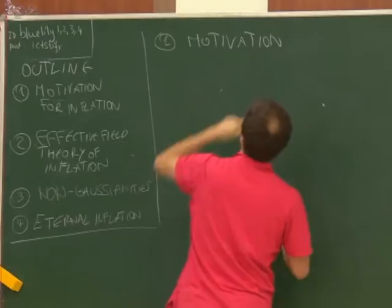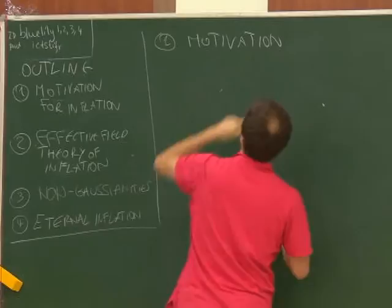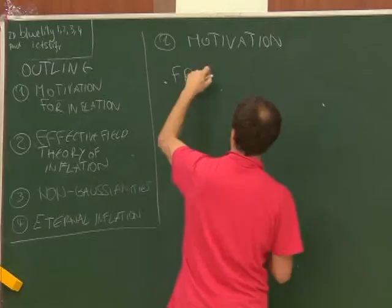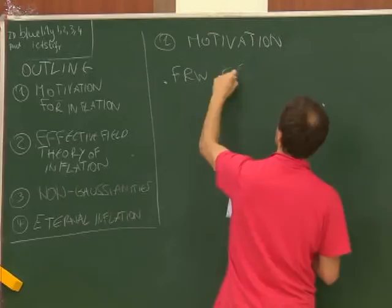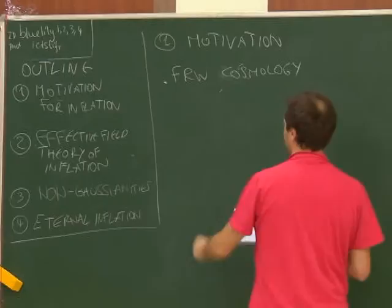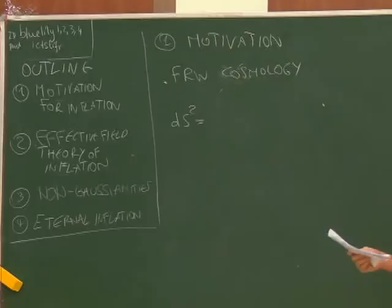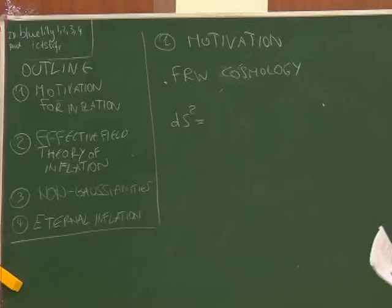In order to set the stage, let's describe the FRW metric or FRW cosmology. This morning you already saw that the metric for FRW can be written in a certain form. What I will write down is the generic FRW metric. What we see in the current universe is that it is very well described by the particular FRW metric which is flat.